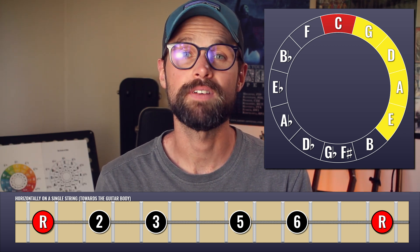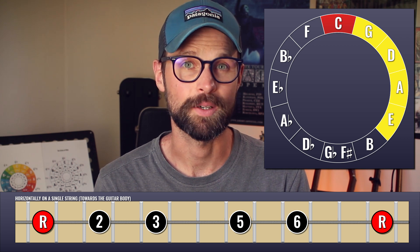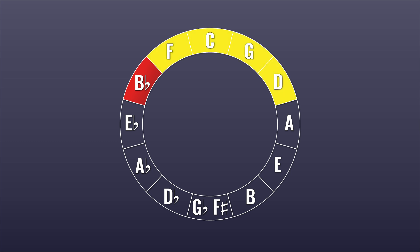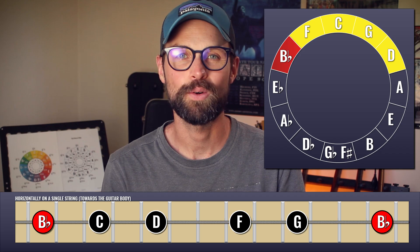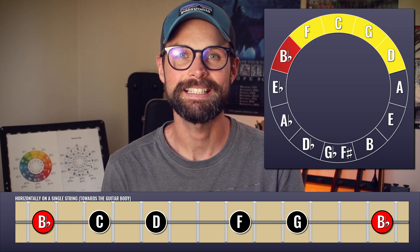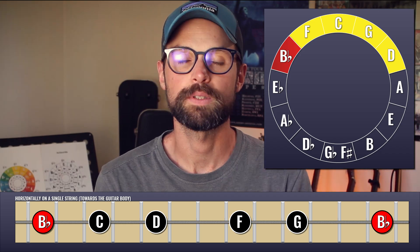What are the five notes of the B-flat major pentatonic? That's right — it's B-flat, F, C, G and D. In order: B-flat, C, D, F and G.